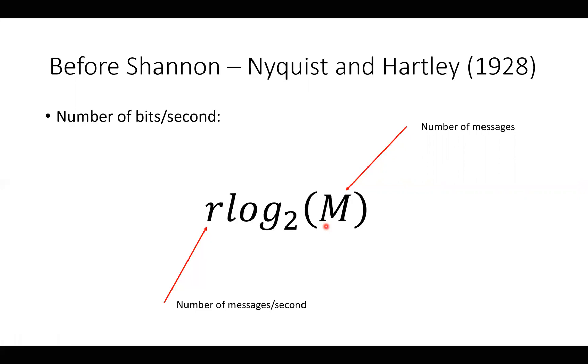The problem is that if we have a lot of messages and limited power, the messages will be susceptible to noise. And that is what Shannon saw and also made a formula for.